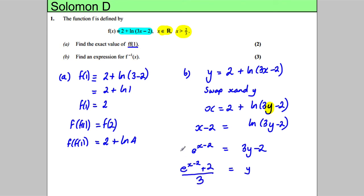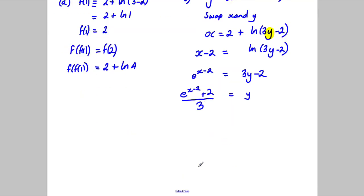That is your inverse function, but it's very important you state your inverse function. Your inverse function f to the negative 1 of x is therefore e to the power of x minus 2, plus 2, all divided by 3. That's your inverse function. Don't just leave it in that form - you must state it like that at the end.